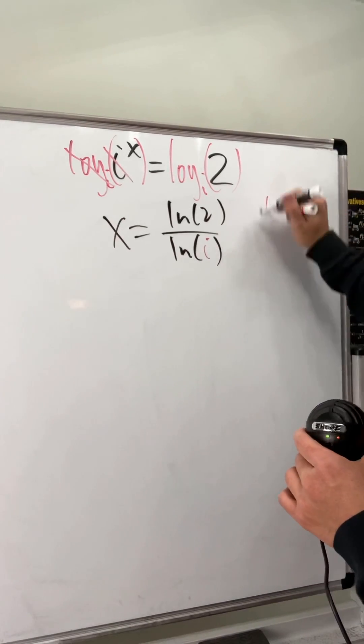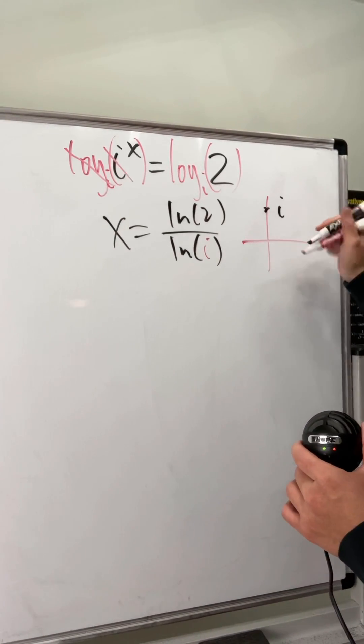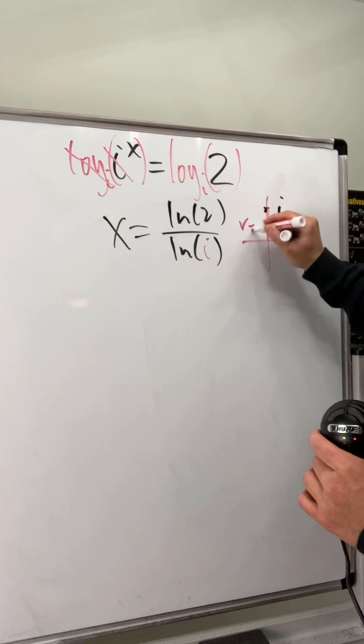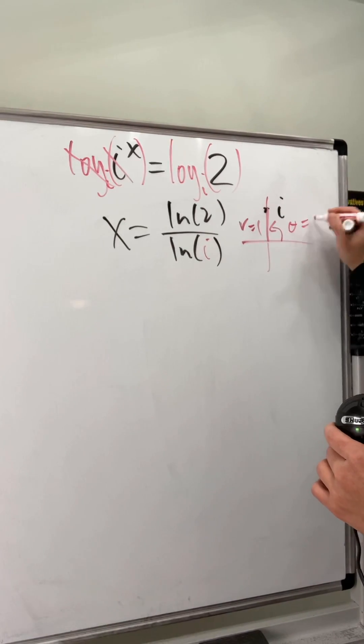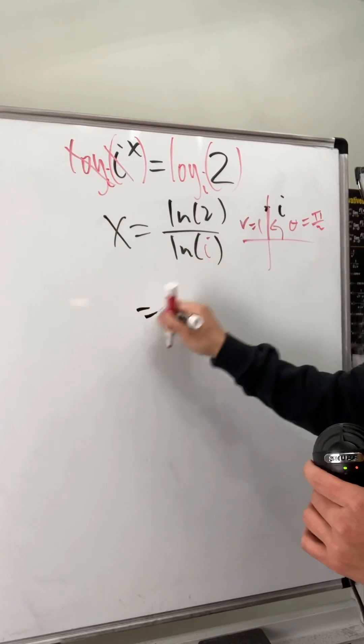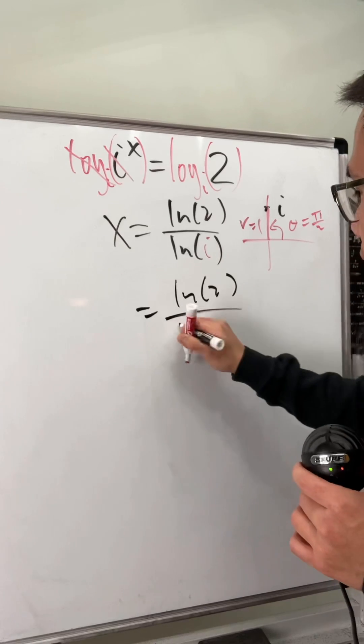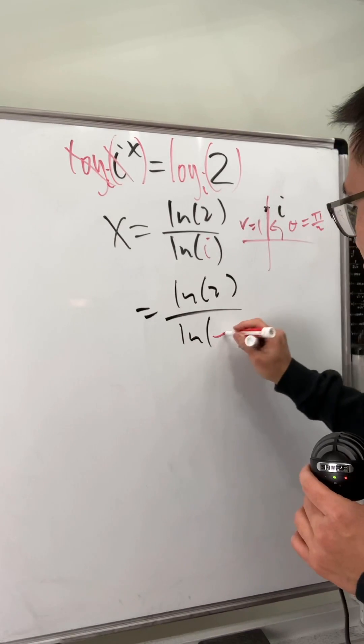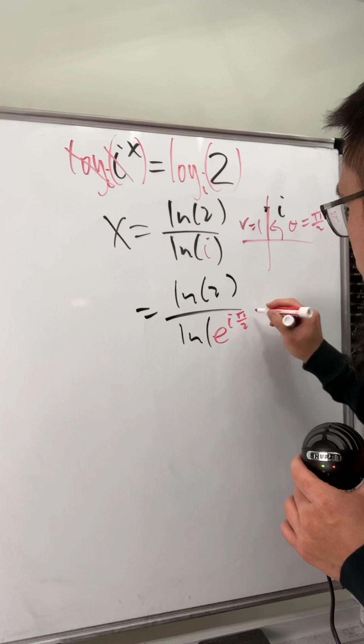And now we have to look at i in the polar form right here. So i is right here. We can see that the distance from here to here is equal to 1, and the angle from here to here is equal to pi over 2. So here we have ln 2 on the top over ln i is the same as r e^(i theta). So r is 1.